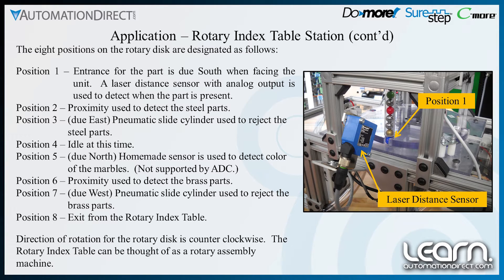Position 1 is the entrance for the part and is due south when facing the unit. A laser distance sensor with an analog output is used to detect when the part is present. Position 2 uses a proximity to detect the steel parts. Position 3, which is due east, includes the pneumatic slide cylinder used to reject the steel parts. Position 4 is idle at this time. Position 5 is due north and is where the homemade sensor is used to detect the color of the marbles — it is not sold or supported by ADC. Position 6 uses a proximity to detect the brass parts. Position 7, which is due west, includes the pneumatic slide cylinder used to reject the brass parts. Position 8 is the exit from the rotary index table. Direction of rotation for the rotary disk is counter-clockwise.